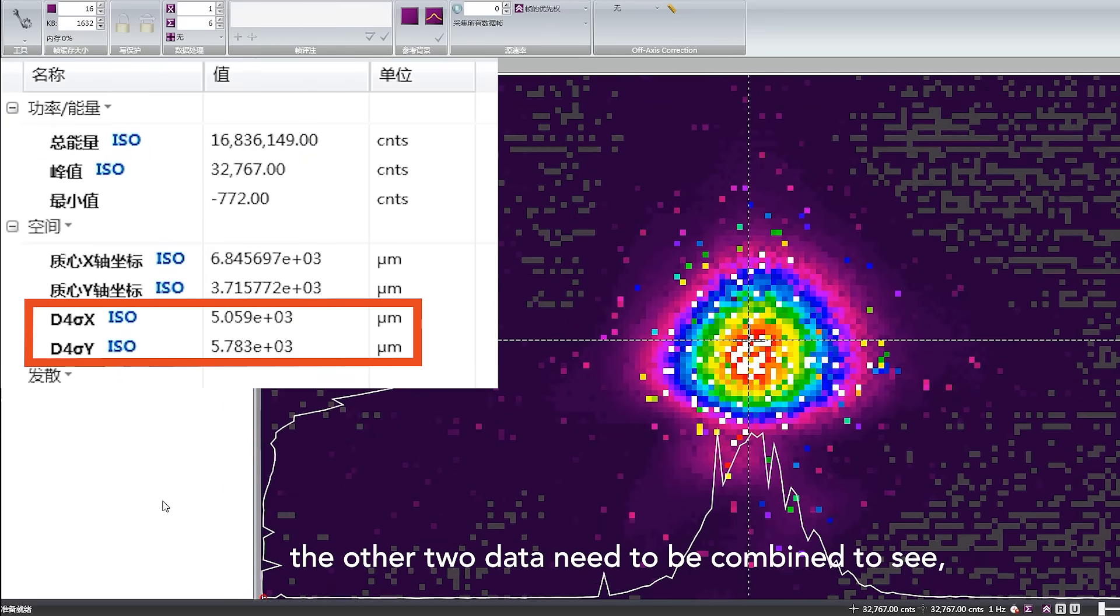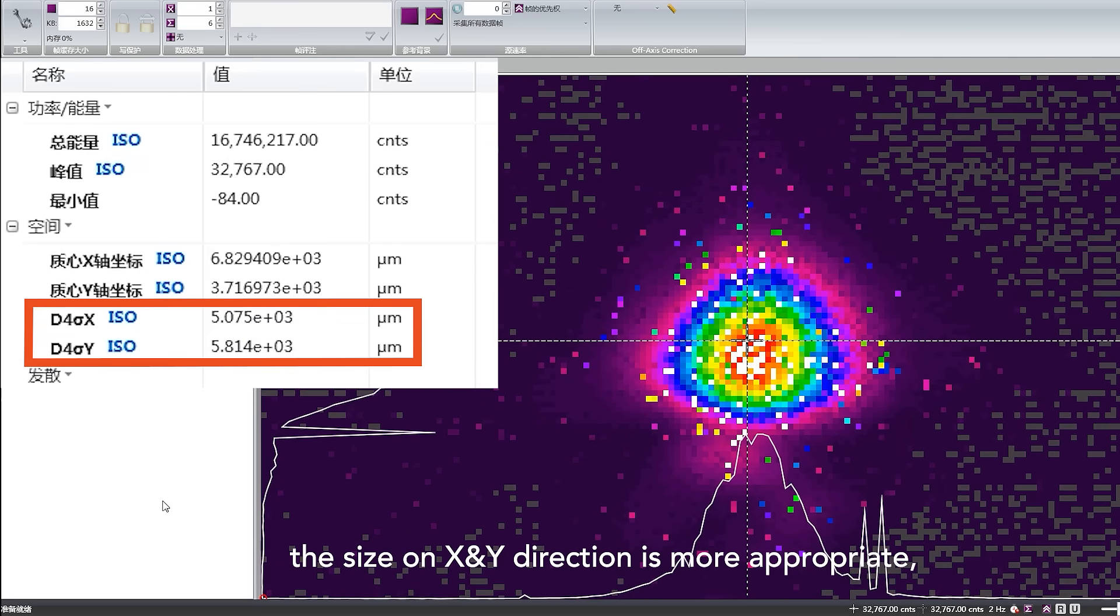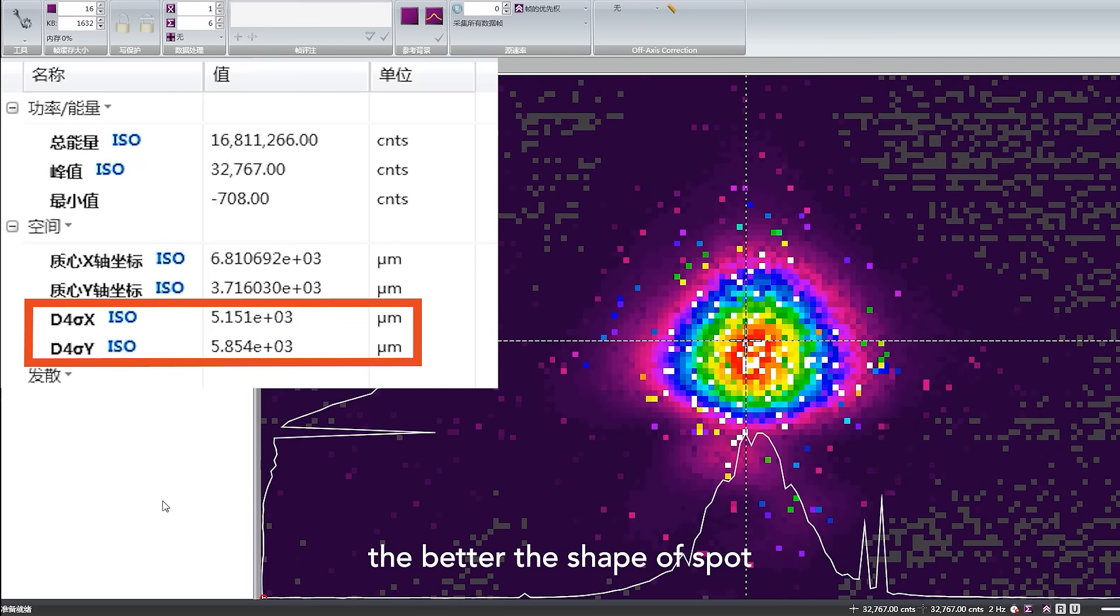The other two data need to be combined to see. The size on X and Y direction that is more appropriate means better spot shape.